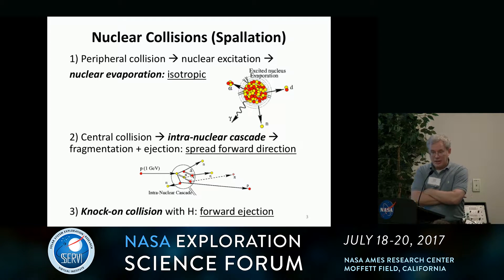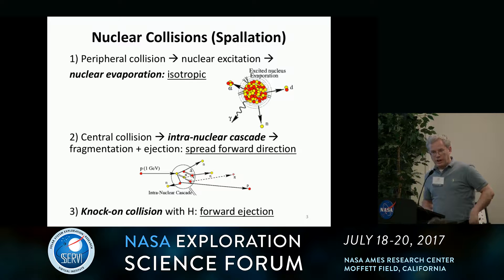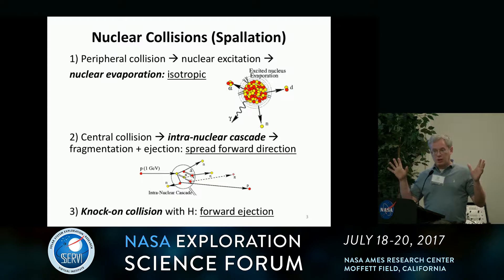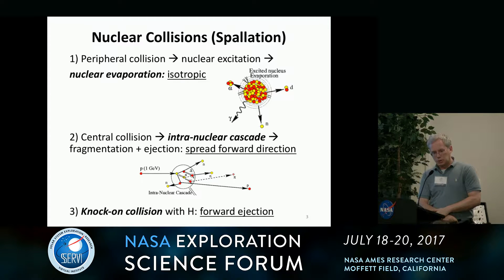There are three types of collisions. In the first, a process called nuclear evaporation, a cosmic ray makes a glancing blow — a peripheral collision — on a nucleus. It excites the nucleus, and when the nucleus de-excites it emits protons, neutrons, and other nucleons isotropically in random directions. This is the one process that can produce albedo particles traveling straight up out of the lunar regolith, because the directions of these particles don't depend on the direction of the incoming cosmic ray.